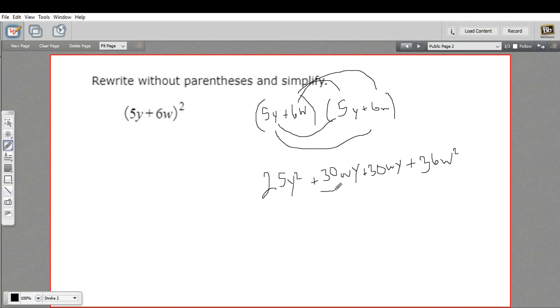So these are like terms. They'll add up to 60wy. And we have 25y squared plus 60wy plus 36w squared.